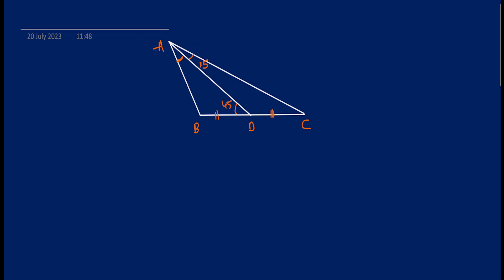Welcome to the new video. We're going to solve a geometry problem which is very interesting, and we will solve it by using various theorems we learned in our basic geometry classes. We have a triangle ABC, and inside that triangle we have another triangle ABD. Angle ADB is 45° and angle DAC is 15°. We have to find angle BAD — let's denote that angle by x.